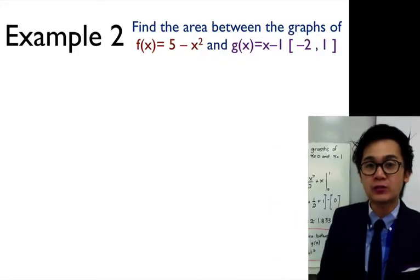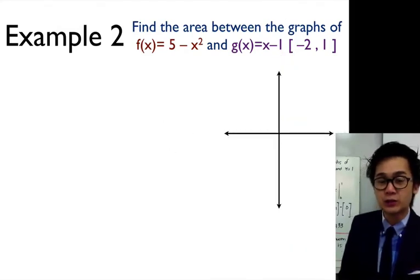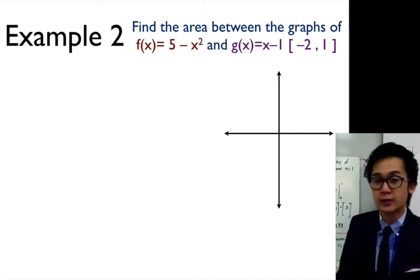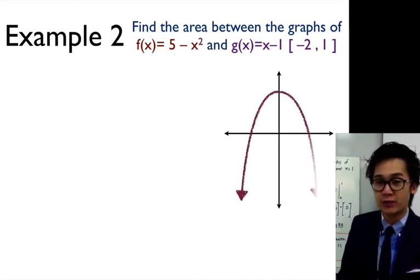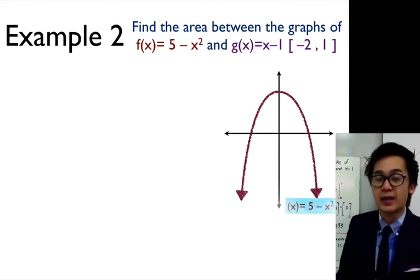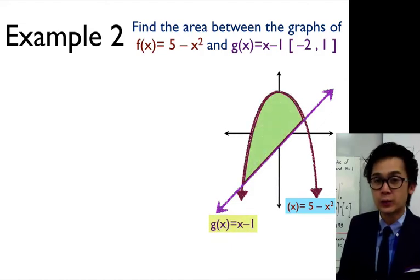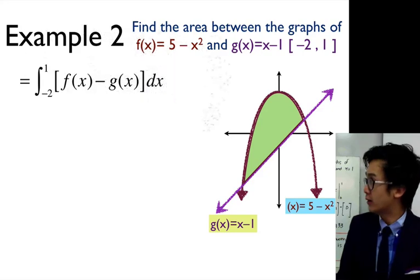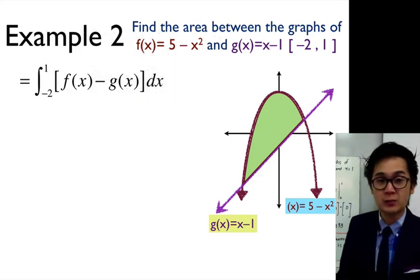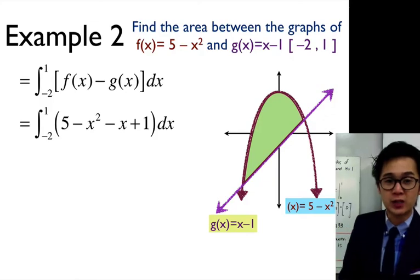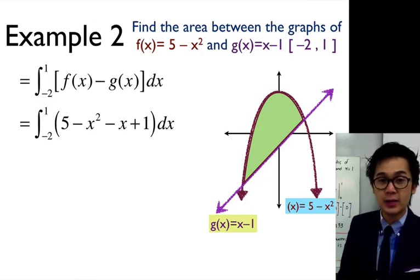In this example, we have to find the area between the graphs of f(x) = 5 - x² and g(x) = x - 1 from -2 to 1. f(x) is a parabola opening downwards, and g(x) is a linear function. To find the area between the two curves, we use the formula: the integral of f(x) minus g(x) dx from -2 to 1, where f(x) = 5 - x² and minus g(x) becomes -x + 1.